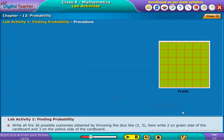Write all the 36 possible outcomes obtained by throwing the dice, like two, three. Write two on the green side of the cardboard and three on the yellow side of the cardboard.